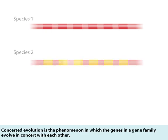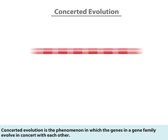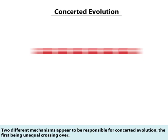Concerted evolution is the phenomenon in which the genes in a gene family evolve in concert with each other. Two different mechanisms appear to be responsible for concerted evolution, the first being unequal crossing over.